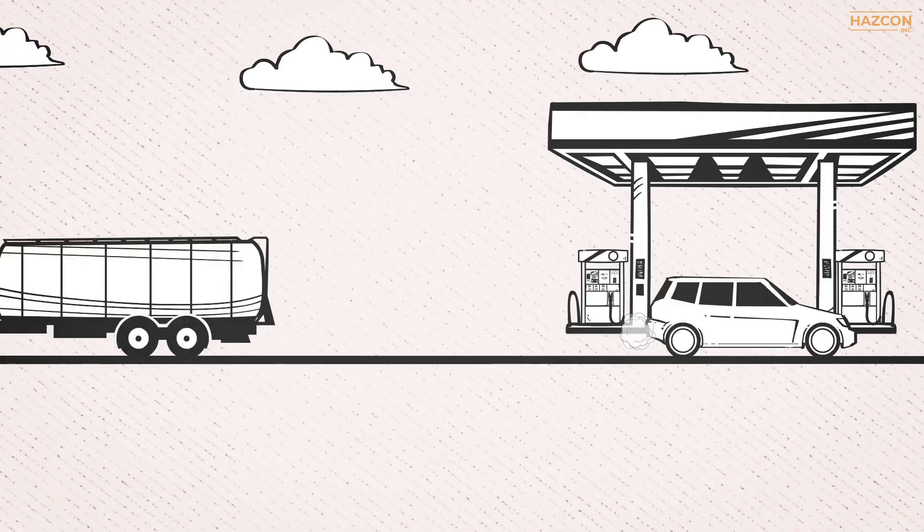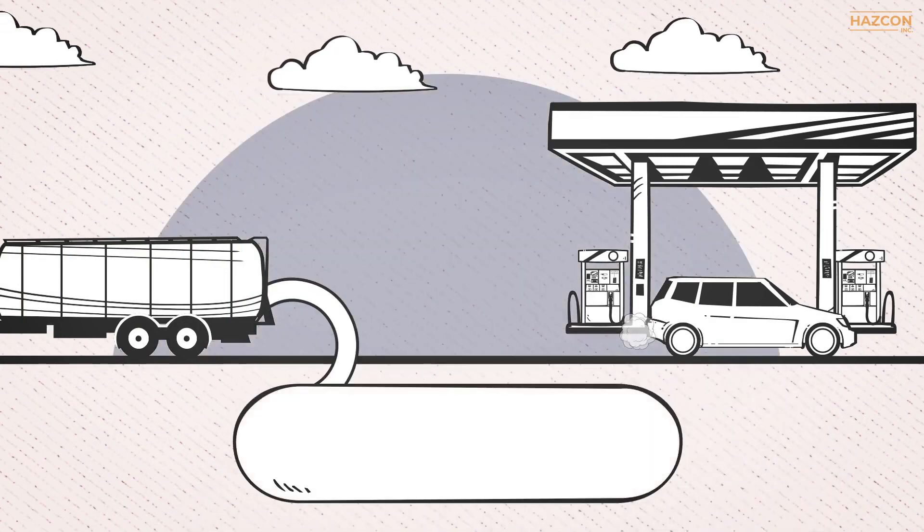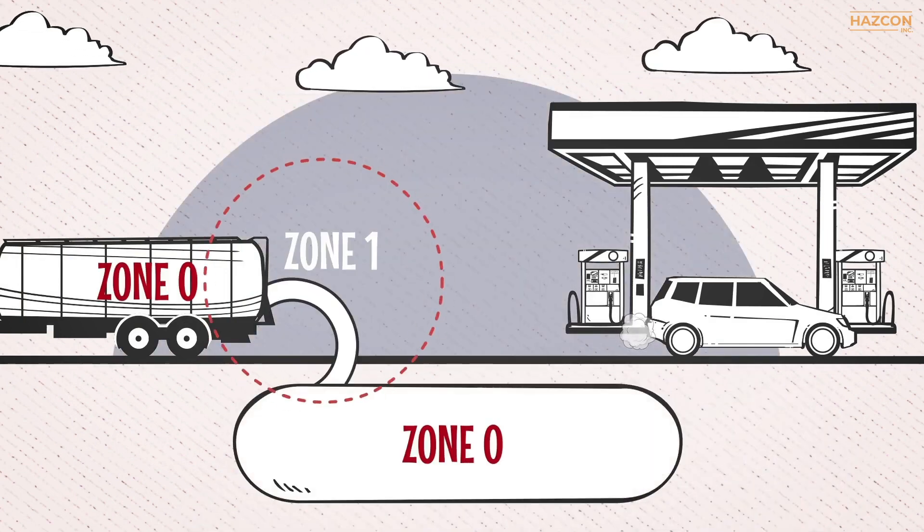This diagram of a typical petrol station illustrates the areas that are classified as Zone 0, Zone 1, and Zone 2.